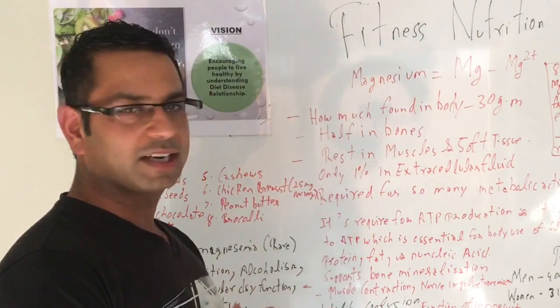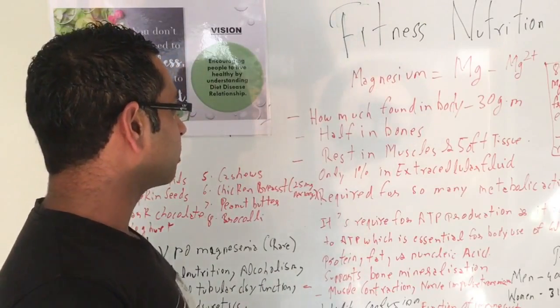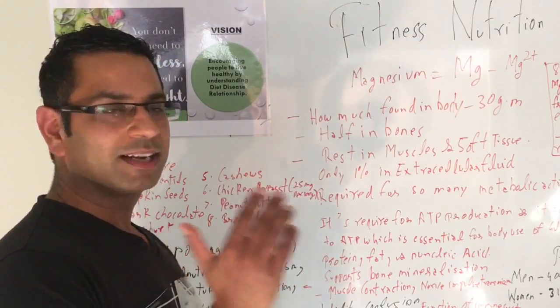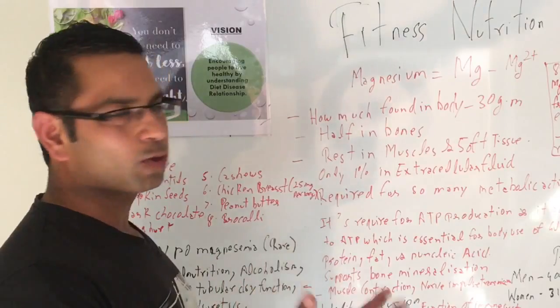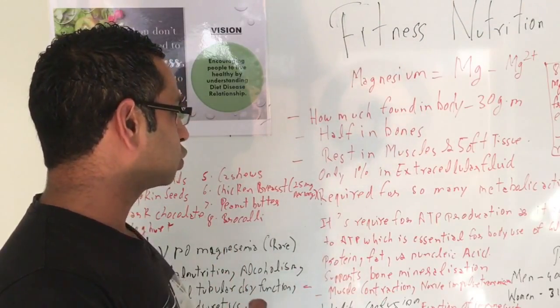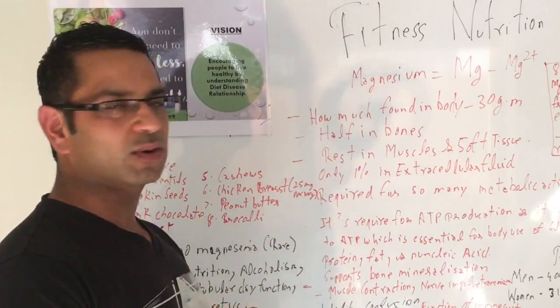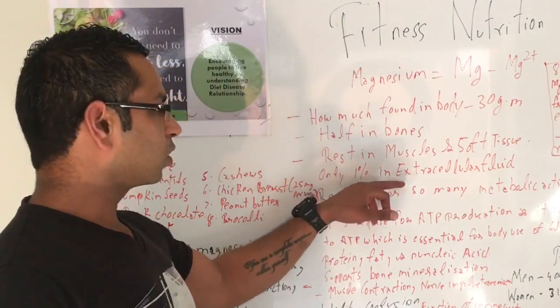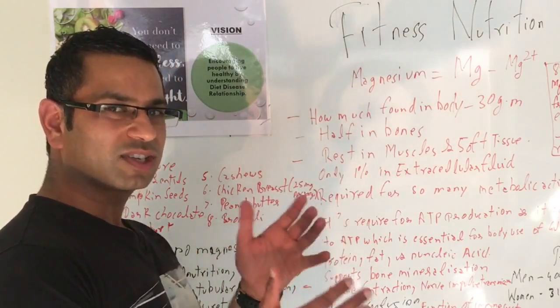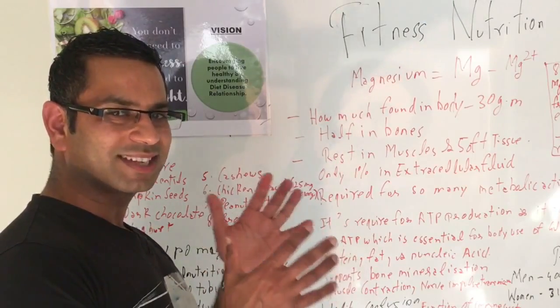Around 30 grams of magnesium is found in your body. Half of that is in your bones, and the rest is in your muscles and soft tissue. Only less than 1% is actually found in the extracellular fluid. In the body, we've got 66% fluid in the intracellular space.